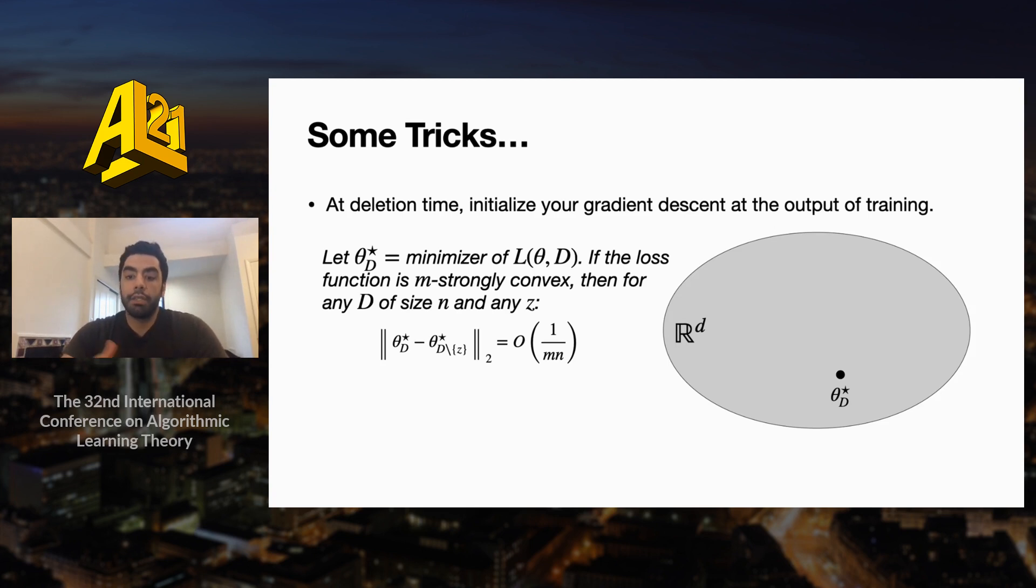To give a visual description of this initialization idea, imagine at training time, we initialize our gradient descent at some parameter θ_0, and after t iterations, we get some parameter θ_t, which has come close to the optimizer on the training data set D. Note that we can choose t large enough such that the gap between the output θ_t and the optimizer is small, in particular in the order of 1/(μn).